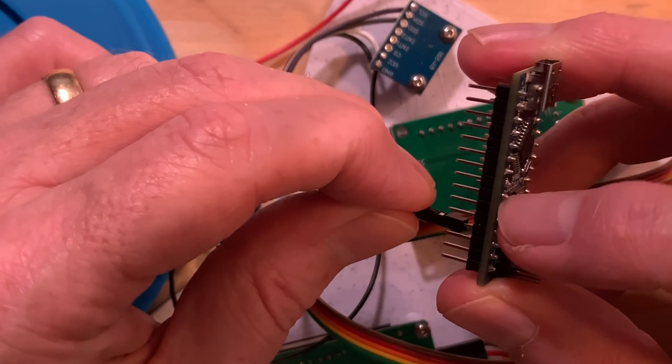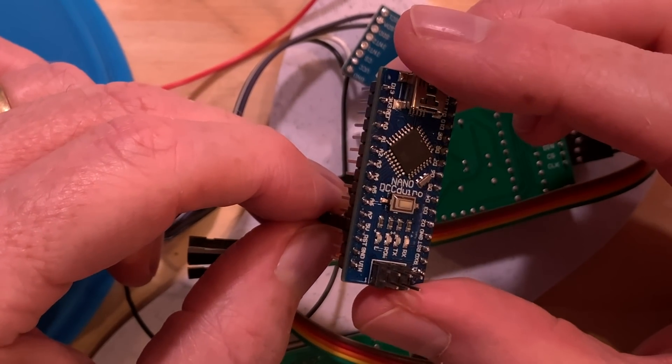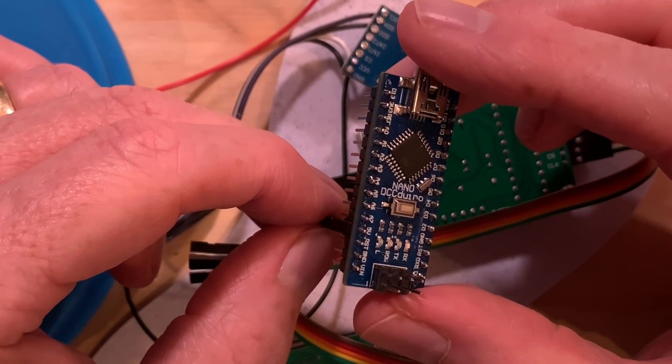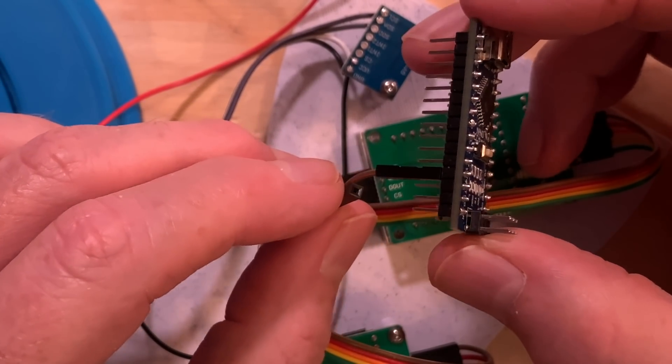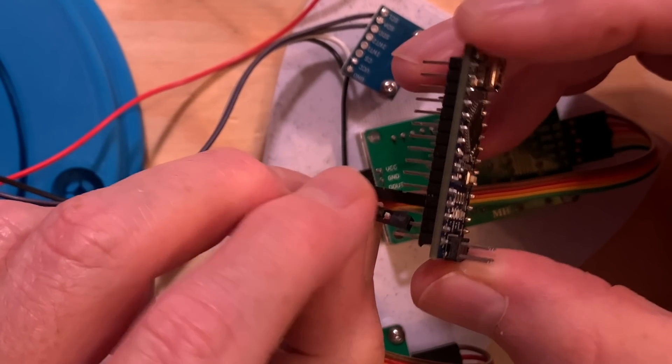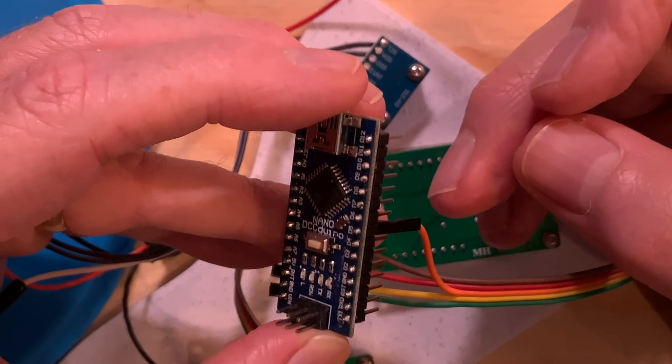The VCC pin on the LED matrix panel goes to the 5V pin on the Nano. On mine, that's the brown wire. And the ground pin on the LED matrix panel goes to one of the two ground pins on the Nano. On mine, that's the red wire. The DN pin on the LED matrix goes to the D5 pin on the Nano.